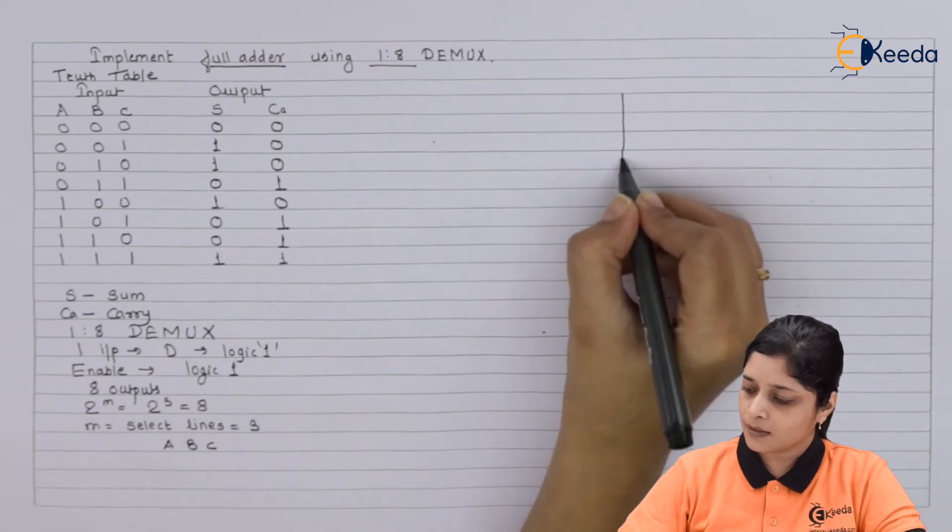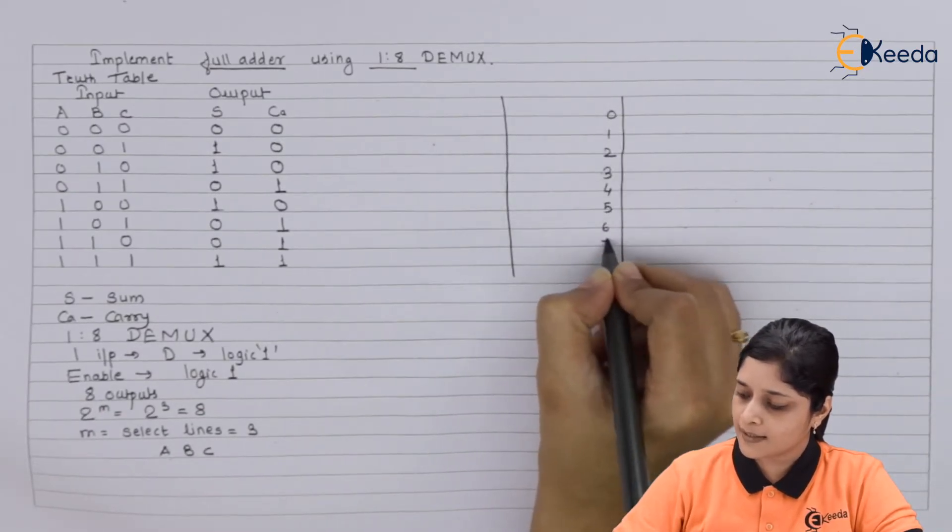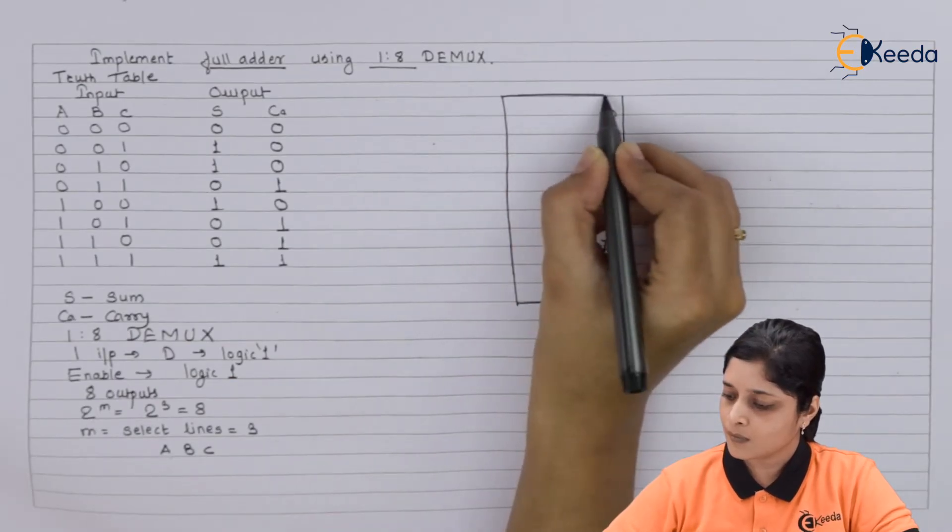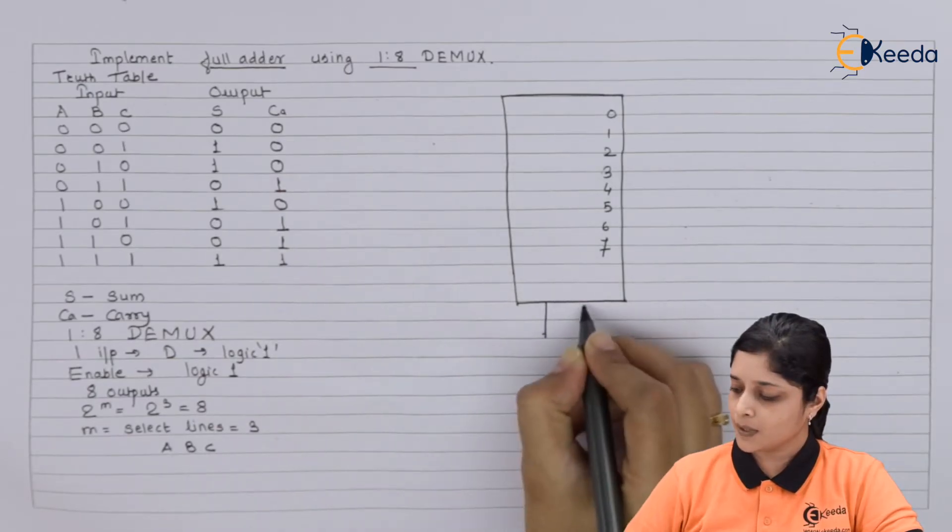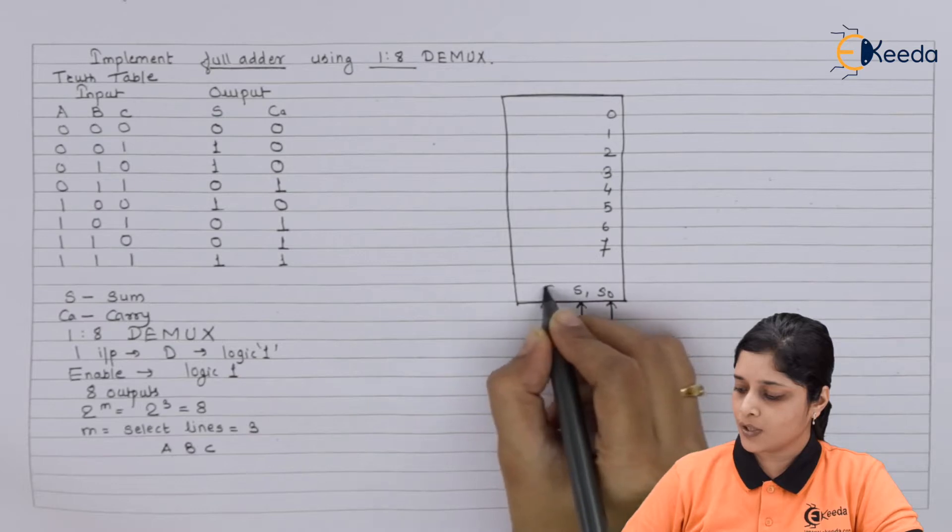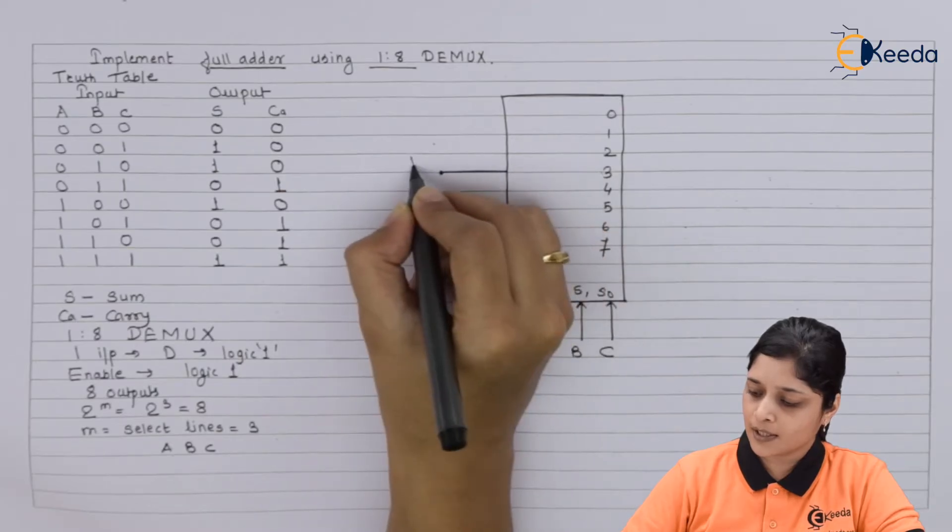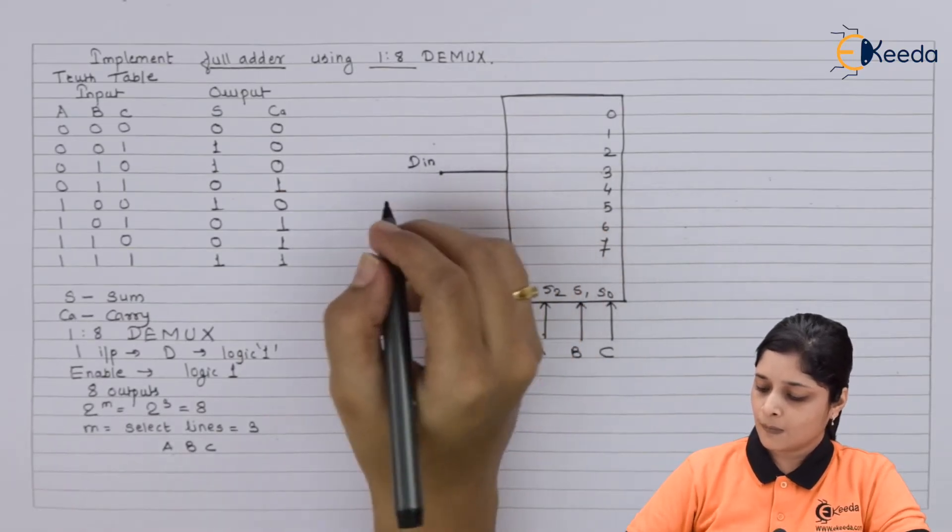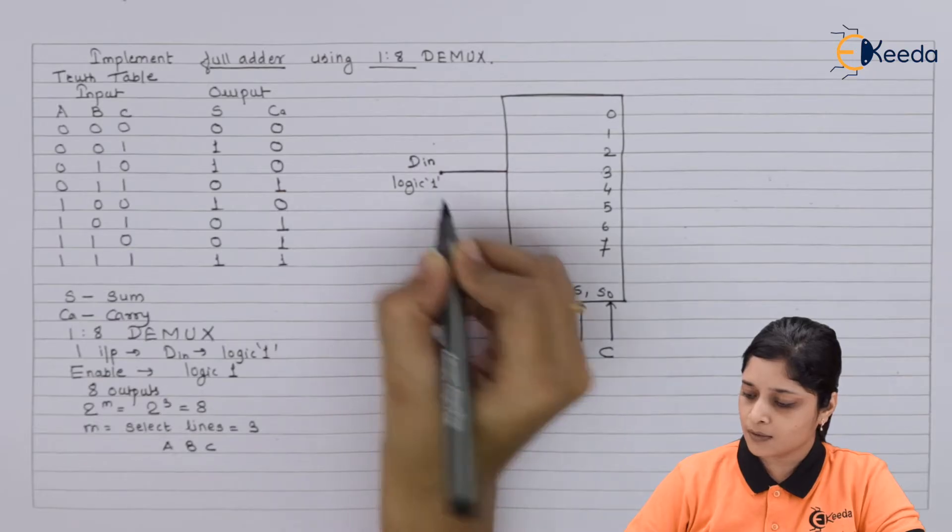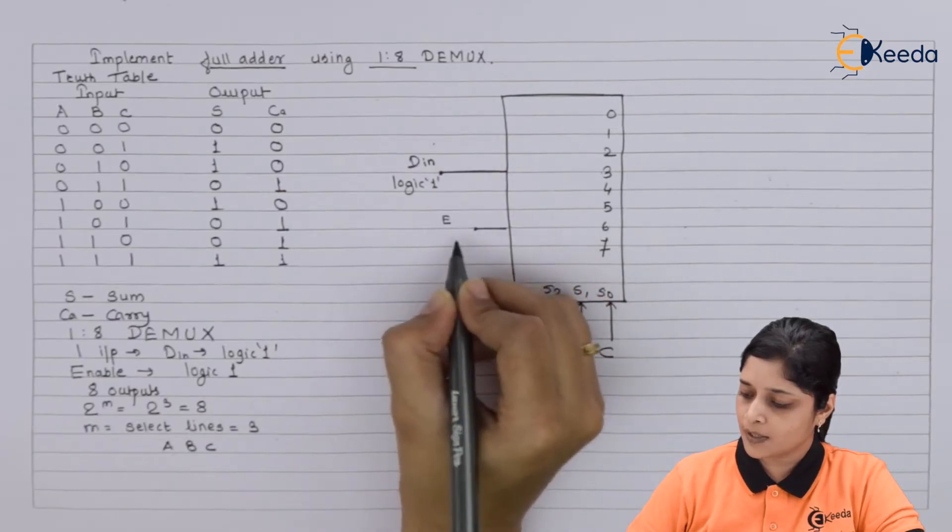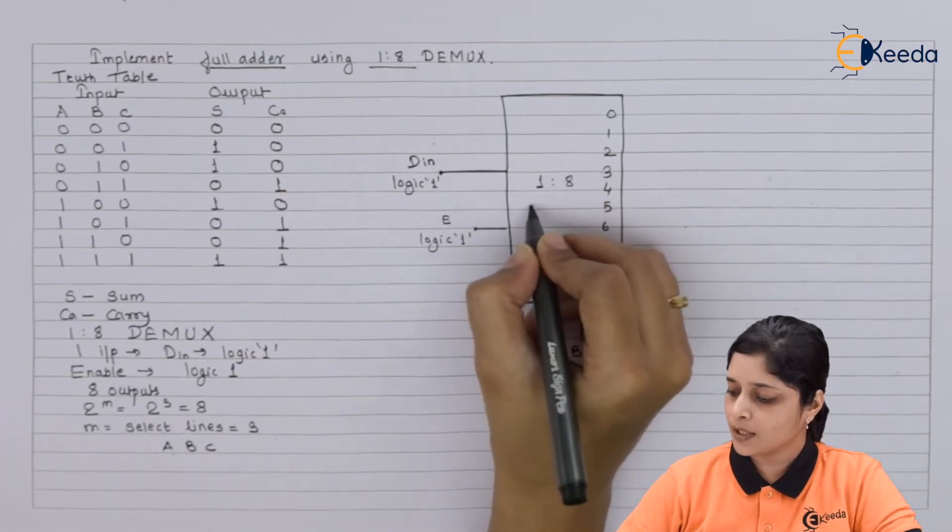It has 8 outputs. We will write here 0, 1, 2, 3, 4, 5, 6 and 7. Now the inputs to the full adder will act as select lines for the DEMUX. They are S0, S1 and S2, and these are here A, B and C. This is the by default it has only one input D in or you can say here only D. It is always connected to the logic 1, and here also enable terminal is there, E is also connected to the logic 1. Here 1 is to 8 DEMUX we have used here.